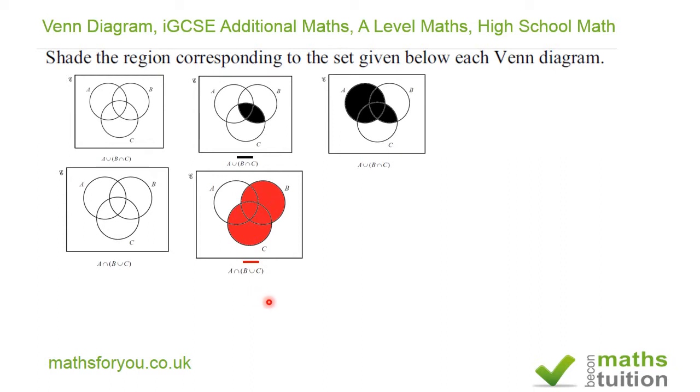Now I want to find what's common to A and to B union C, and that will be the third diagram which is this one here. So that will be A intersection B union C because the big red is common to A and B union C.